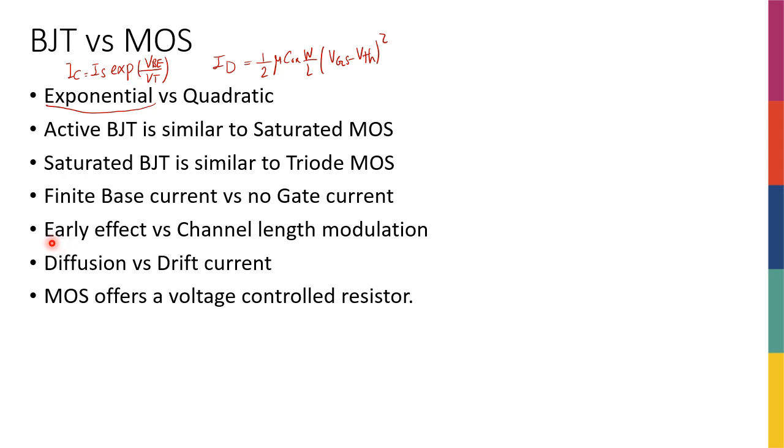With BJTs, we had early effect that caused this expression not to be perfect, and we had a little bit of non-ideality in our device being a voltage-controlled current source. In MOSFETs, we have channel length modulation that, while it's very different in terms of its principles and fundamentals, at the end of the day, it has a similar kind of effect. It causes the transistor to be non-ideal current source, a non-ideal voltage-controlled current source.